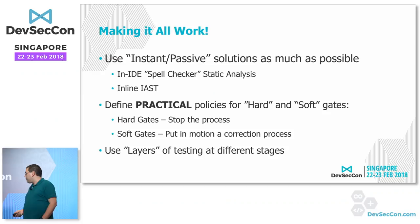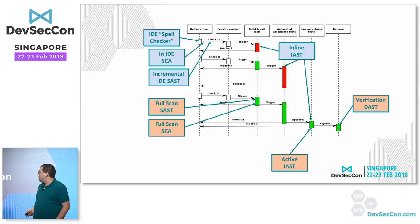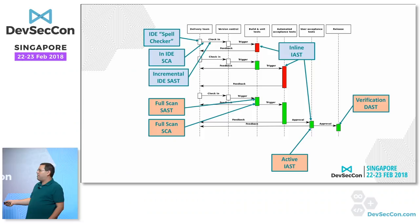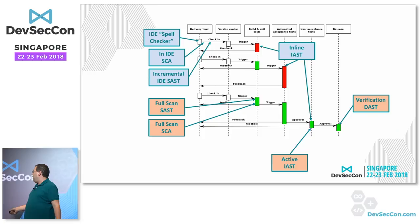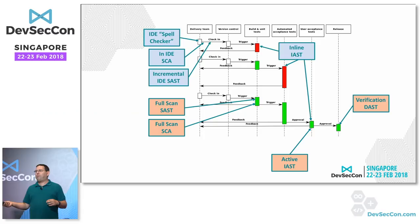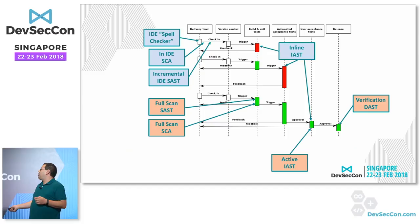Going back to the pipeline diagram: IDE incremental and inline IAST are part of the fast pipeline. Then as we go to full deployment I create a separate slower track where I can do a full SAST — or managed SAST if I prefer — which takes days but that's okay. I can run a full DAST at the end. I had a customer with two SAST tools, an IAST, and a DAST, and they said the DAST is just there to check the production site: if it finds something they get fired, because at that point nothing is supposed to be there.